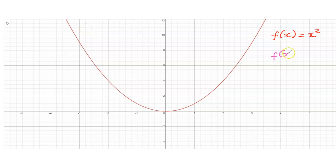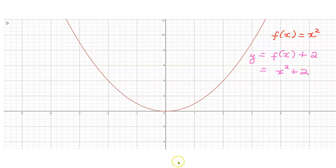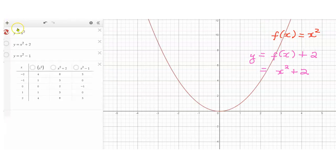What we want to do next is to consider the graph of f of x plus 2. This is our new function — in other words, f of x is x squared, so x squared plus 2. In order to do this, let us first get some points from our original graph x squared. So I have my tables here with some of the points.